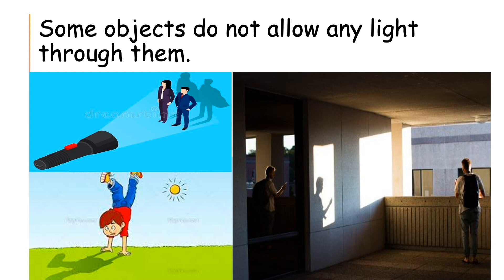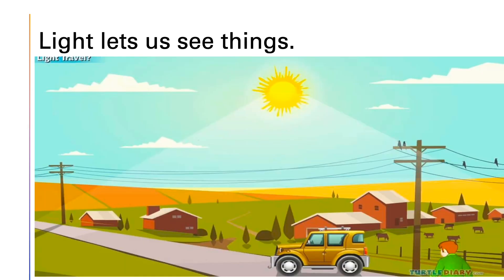That is what we call a shadow. Light lets us see things. When light hits an object, it bounces off the object, then the light goes into your eyes — and this is what lets you see the object. As you can see in the picture here...